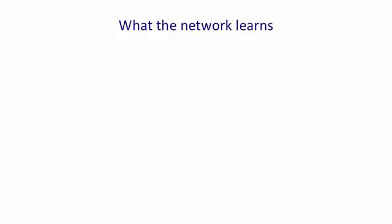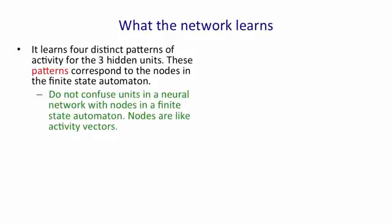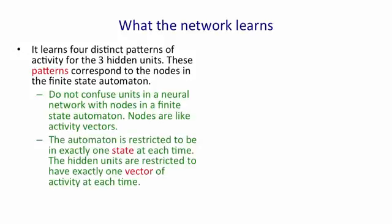It's interesting to look at what the recurrent neural network learns. It learns four distinct patterns of activity in its three hidden units and these patterns correspond to the nodes in the finite state automaton for binary addition. We must confuse the units in a neural network with the nodes in a finite state automaton. The nodes in the finite state automaton correspond to the activity vectors of the recurrent neural network. The automaton is restricted to be in exactly one state at each time and similarly, the hidden units are restricted to have exactly one activity vector at each time in the recurrent neural network.